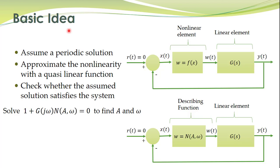The describing function approach is utilized to predict the existence of limit cycles in non-linear systems. The approach is applicable to systems which can be described in a particular format. In the last lecture we learned that if the system is not in this format we can bring it into this form by using some rearrangements. The basic idea is to first bring the system into this format, then assume a periodic solution — that is, assume x to be a sinusoidal input — and then approximate.